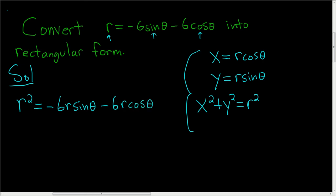Now we know what r squared is. r squared is x squared plus y squared, so let's go ahead and replace that. So x squared plus y squared is equal to r sine theta, that's y, so this is negative 6y, minus r cosine theta is x, so minus 6x.